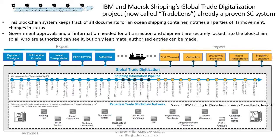One of the most famous and well-publicized blockchain applications is the Global Trade Digitalization Project — now called TradeLens — developed by IBM and Maersk about two years ago. This blockchain system keeps track of all the documents for an ocean shipping container, notifies all parties of movement and status changes, government approvals like customs notifications, and shipping authorizations. All the information needed for a transaction and shipment to occur is securely locked into the blockchain so authorized people can see it, but only legitimate correct entries can be made.